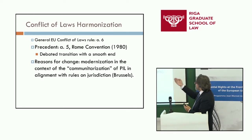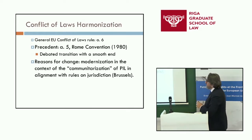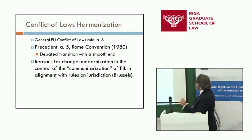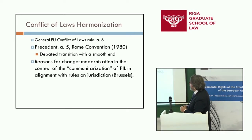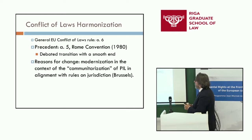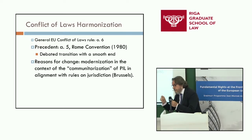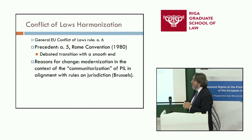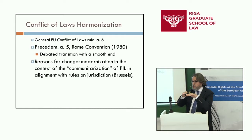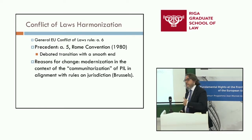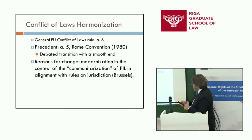The move from convention to regulation was due to what we call the communitarization of private international law — we needed a regulation with the contents of the convention. By the way, because we moved from convention to regulation, we introduced some changes in Rome 1, specifically to align the rules on consumers in Brussels I and those in Rome 1. Both regulations now need to be interpreted in a similar way.